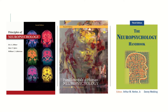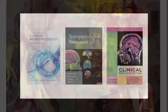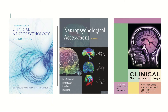The first is the Principles of Neuropsychology. The second is the Fundamentals of Human Neuropsychology. The third, the Neuropsychology Handbook. The fourth is Clinical Neuropsychology, the second edition. The fifth is the Neuropsychological Assessment by Leszac. And the sixth is the Clinical Neuropsychology by Larry Gondstein and Jenny McMill.